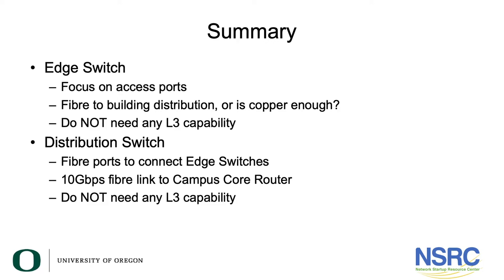To summarize: for the edge switch we focus on access ports. Consider whether fiber to the building distribution is needed or if copper is enough. If you're building a brand new network today, I would be putting fiber from edge into distribution. If you're expanding an existing network, you might carry on with copper for now. You definitely do not need any layer 3 capability — don't be taken in by vendors who pressure you into buying layer 3 features. The distribution switch fiber ports connect to the edge switches, with a 10 gigabit fiber link into the campus core, and again, no layer 3 capability is required.